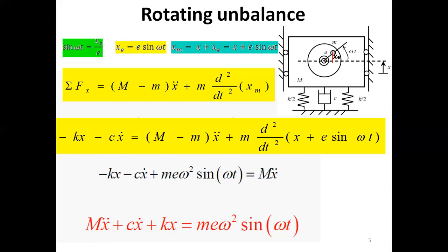Looking at this equation of motion, it is a second-order ordinary differential equation. It is non-homogeneous because we have a function of time on the right-hand side — a forcing function. It is a linear differential equation because ẍ, ẋ, and x all have power one. It has constant coefficients: M, c, and k are all constants.